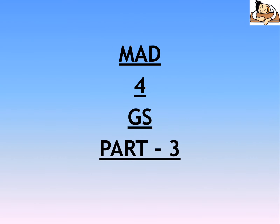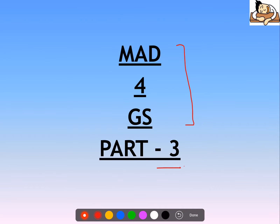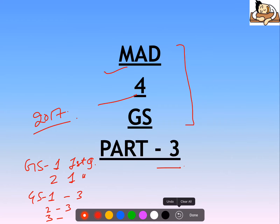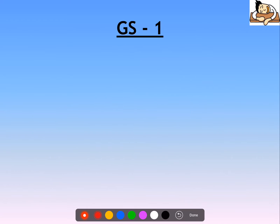Hi everyone, welcome to Sleepy Classes. Today we will basically do MAT for GS Part 3. The MAT series initiative involves discussing 4 questions of each GS paper of 2017 mains. We have already discussed GS1 and GS2. So let's start with the first question.